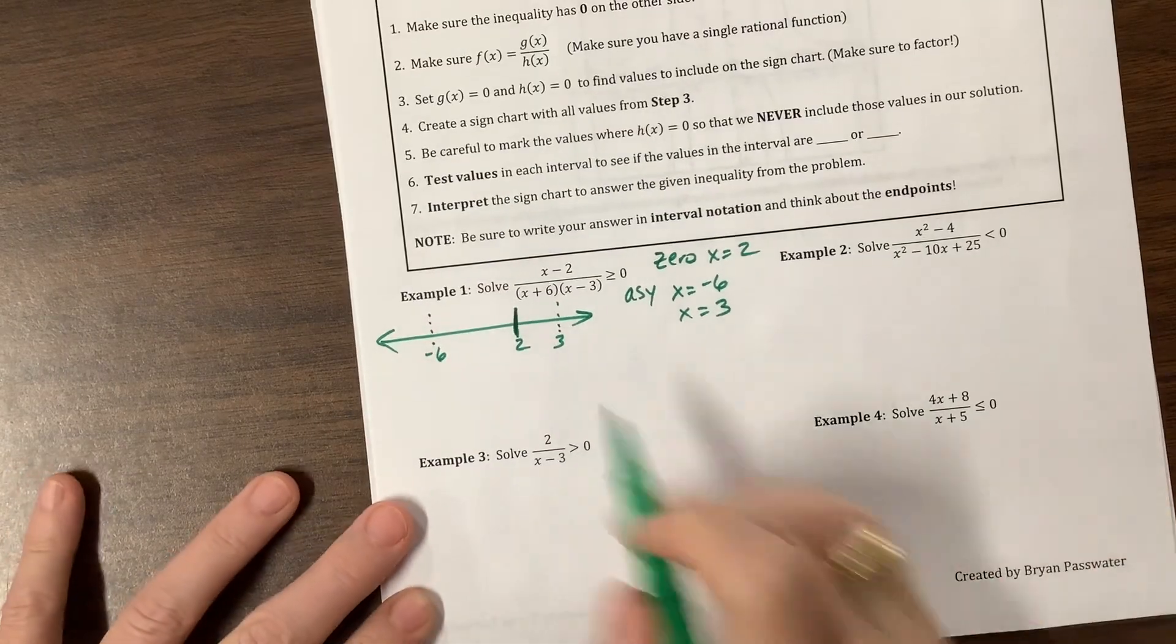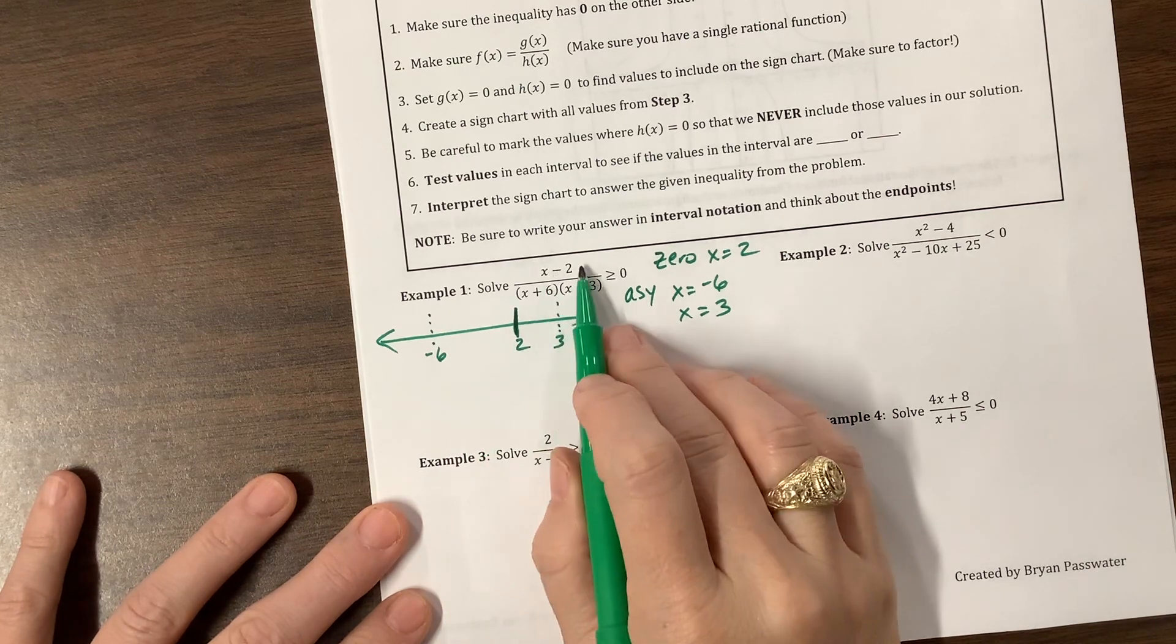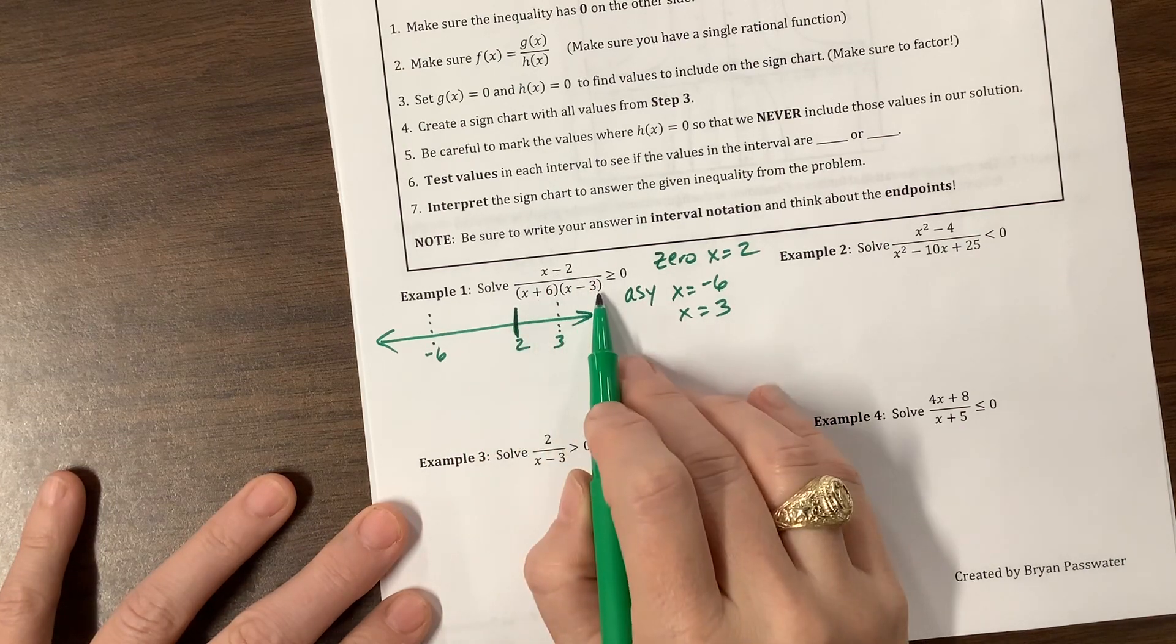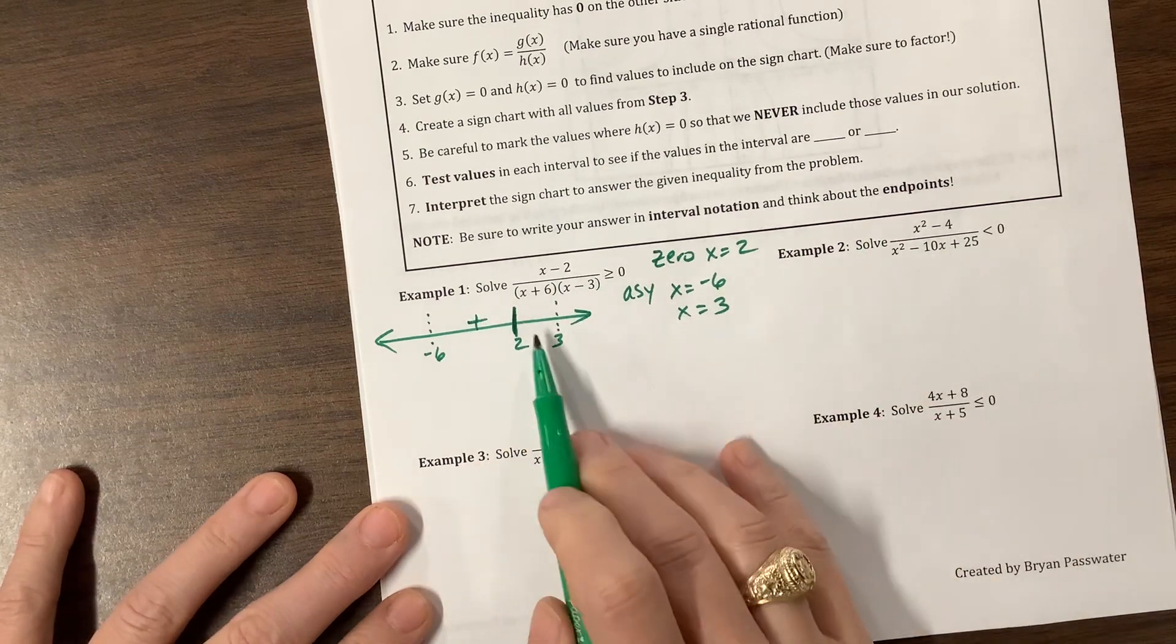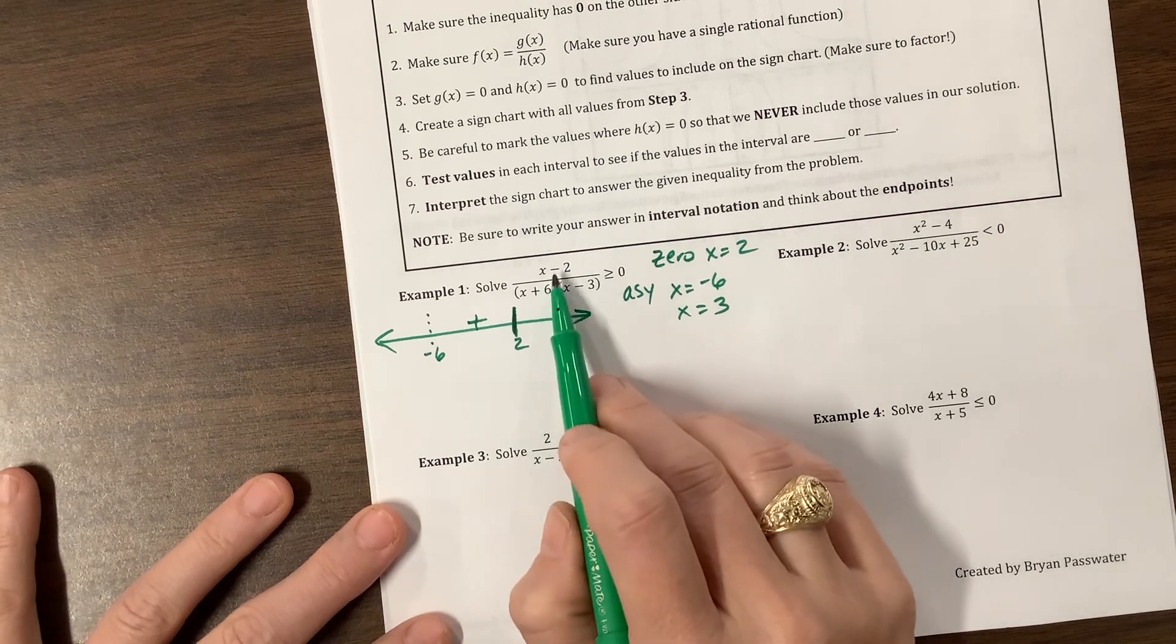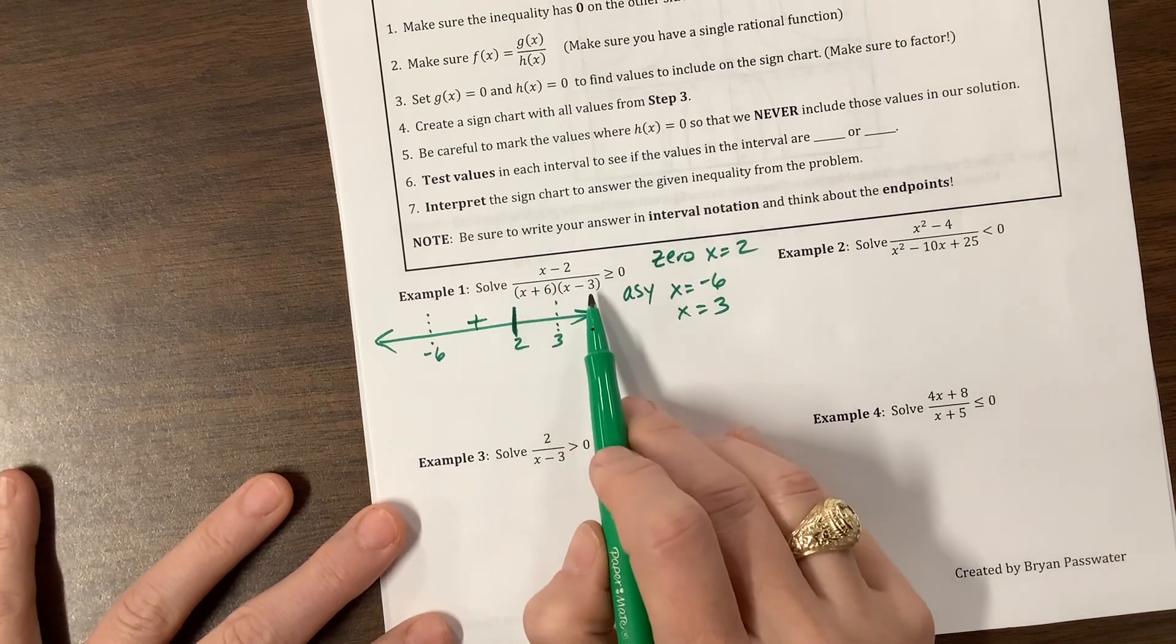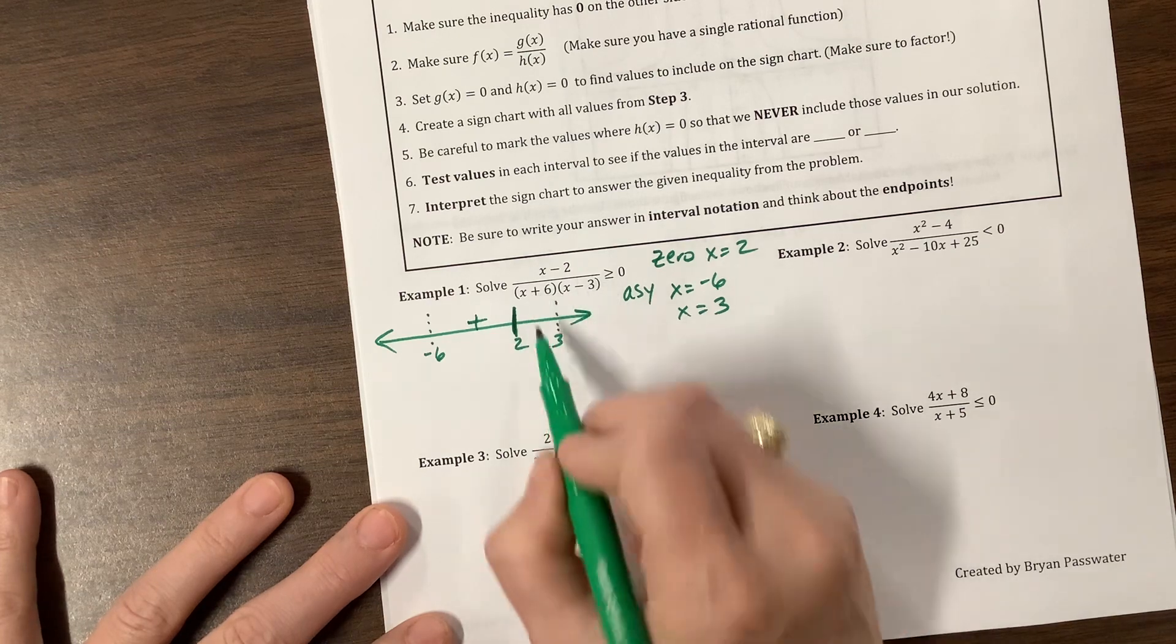So on this one, then I'm going to plug in values. The easiest thing to plug in is zero. So zero, that gives me a negative, a positive, and a negative. So a negative divided by a negative is a positive. Give me something between here. So 2 and a half to 2.5. So that's going to give me a positive, a positive, and a negative. So a positive divided by a positive times a negative is a negative.